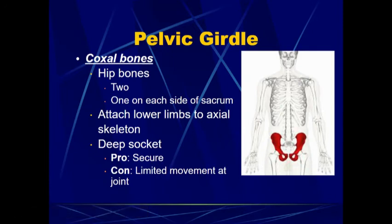Moving to the pelvic girdle — the pelvis is made of two coxal bones. Your pelvis is not one structure; it is actually two separate hip bones, one on each side of the sacrum. These attach the lower limbs to the axial skeleton. Unlike the pectoral girdle, the coxal bones of the pelvic girdle form a very deep socket, and the positive with that is that it is a very secure socket. It is much less common to have dislocations of the femur or the upper leg bone.